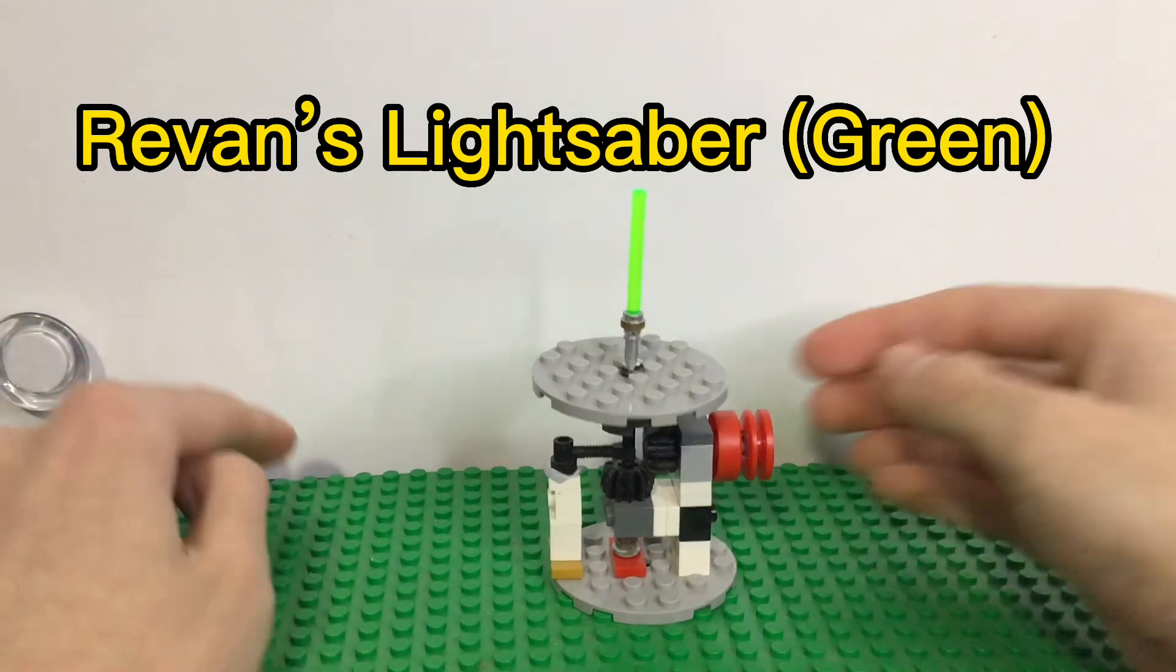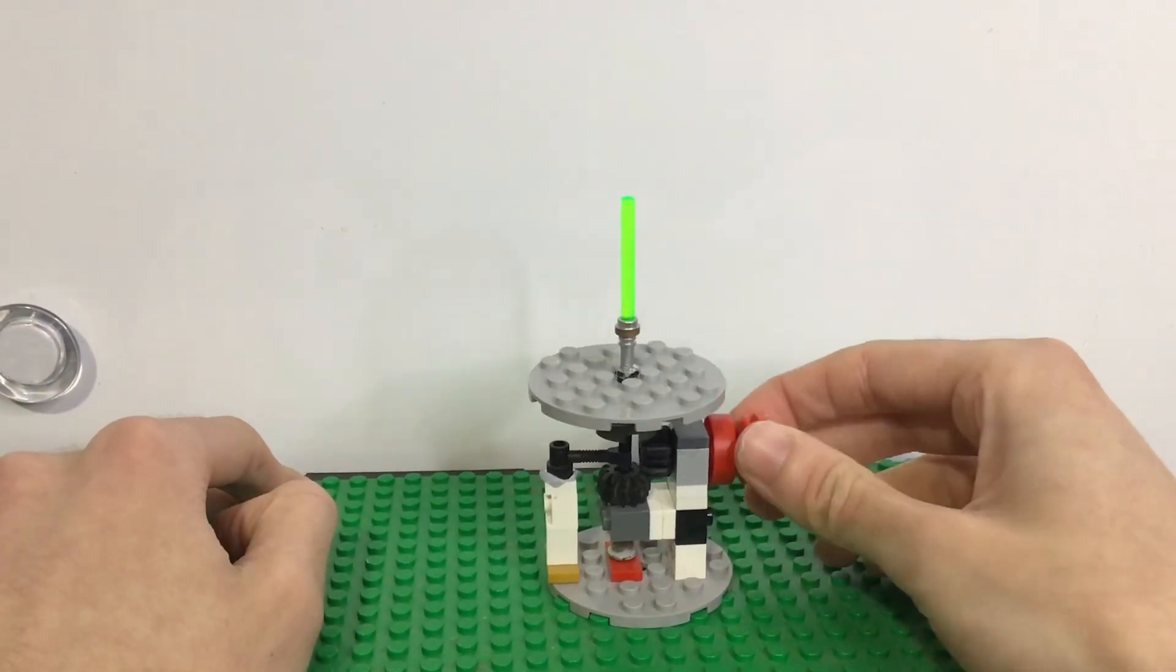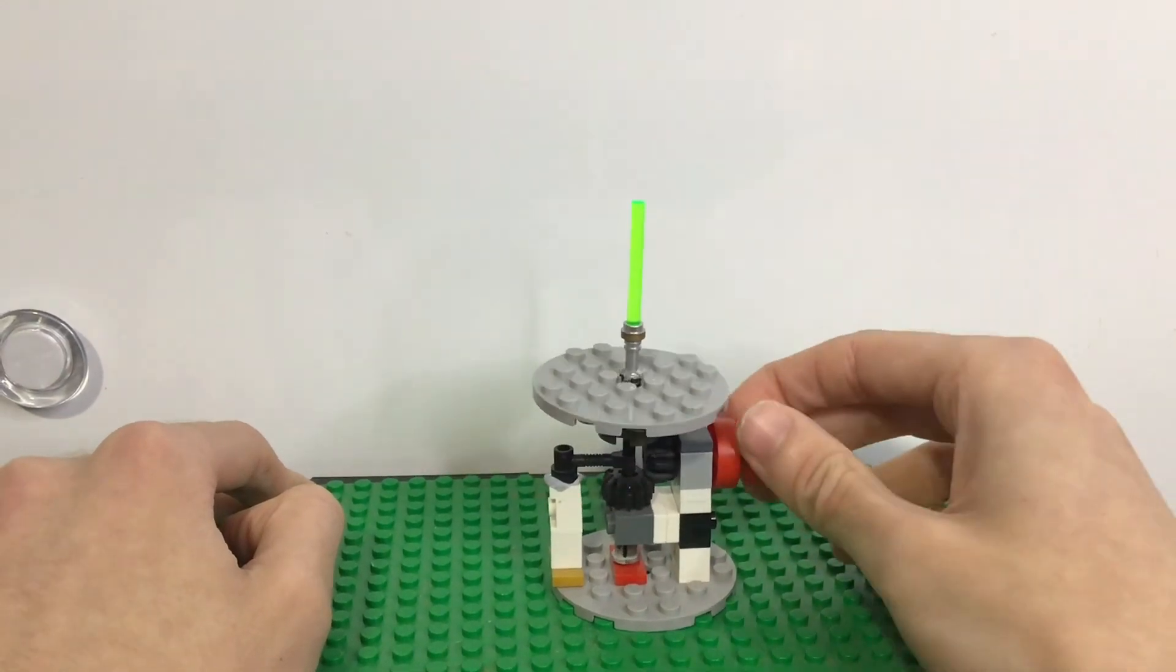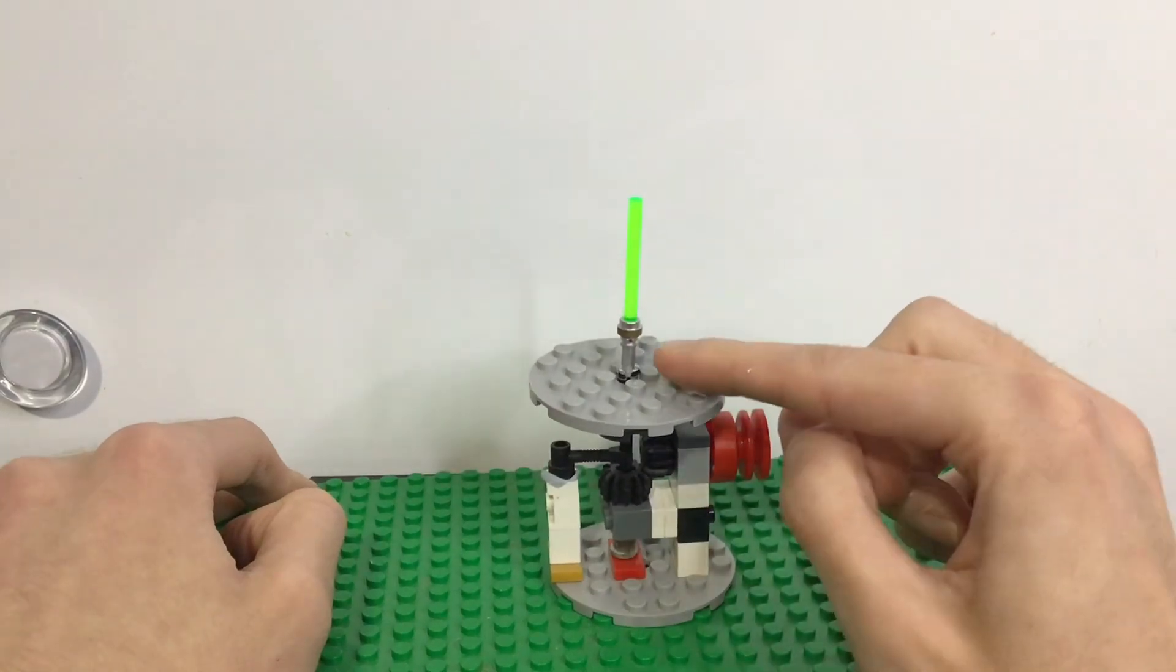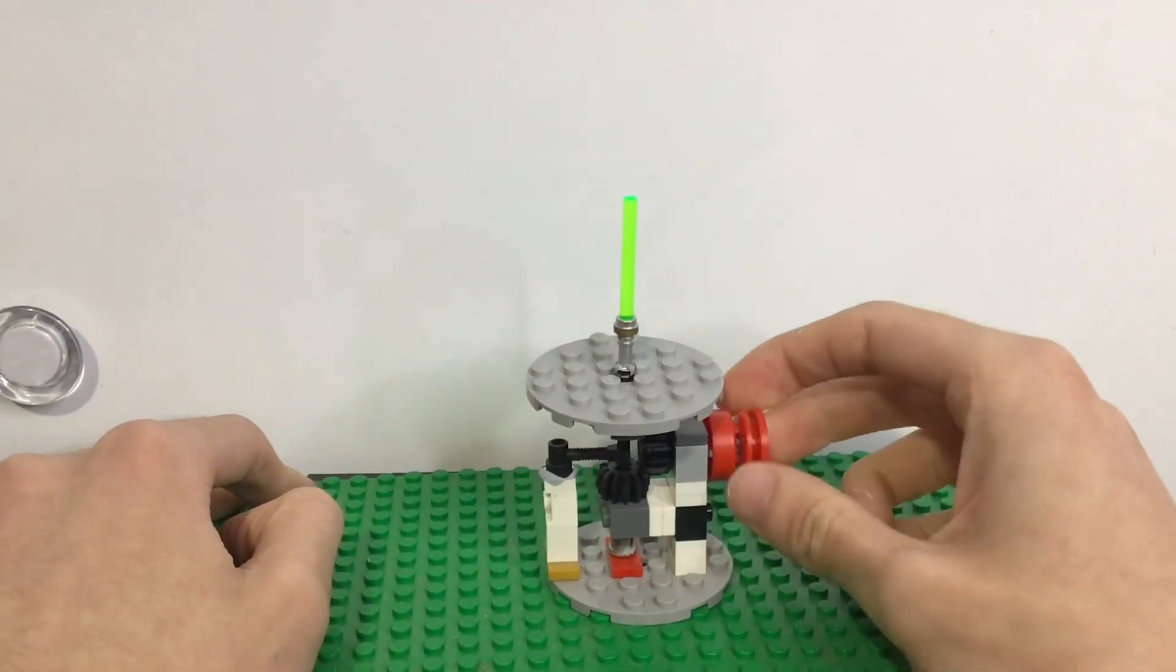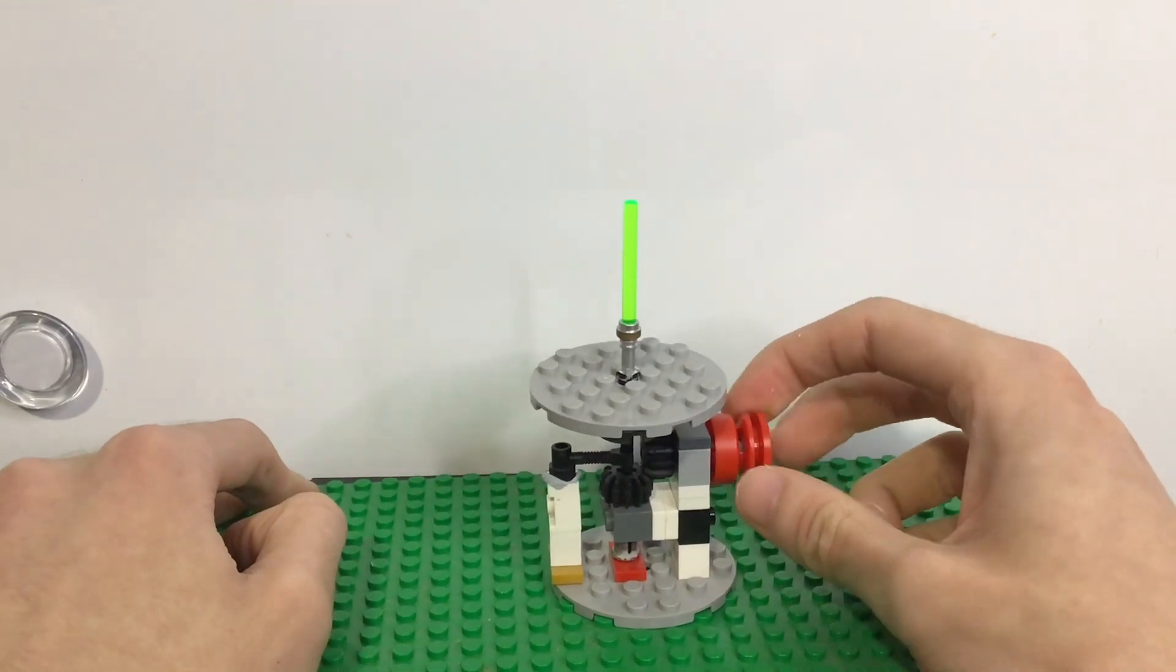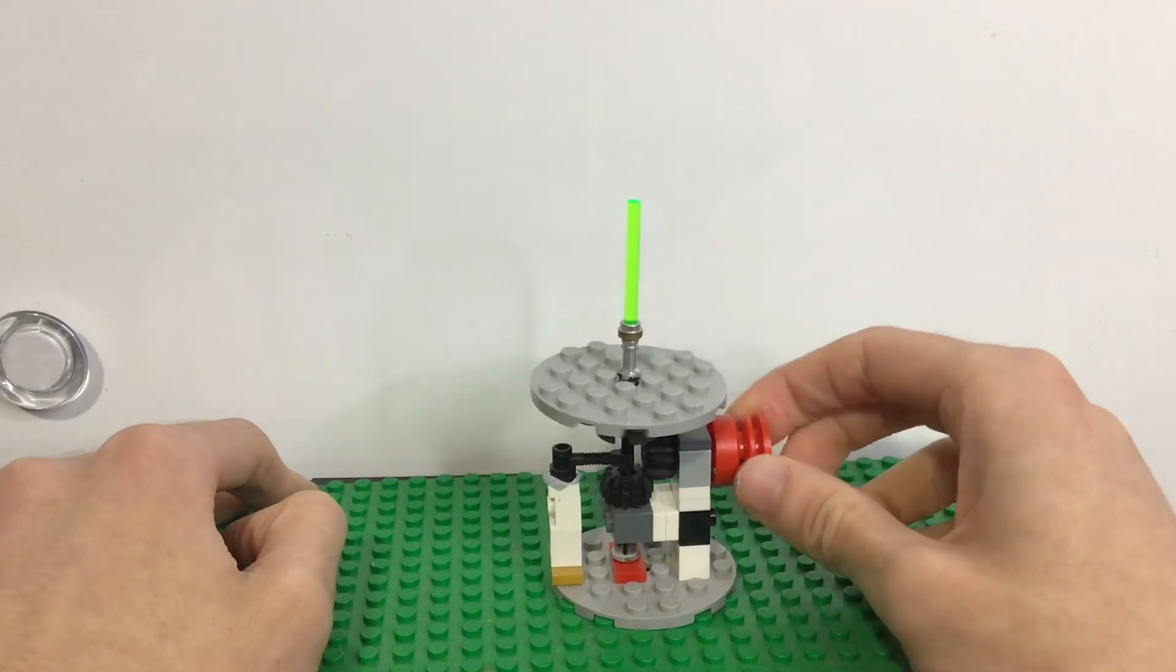Here we have Darth Revan's lightsaber, the green one seen on the Legends book cover. As you can see, it's got a golden rim at the top with black detailing at the bottom. It also has a red button, not on the gold part but below it, so it's accurate to the lightsaber model. I'm really happy with this one, I think it looks fantastic.